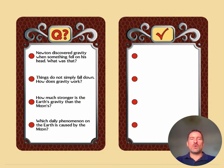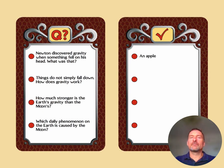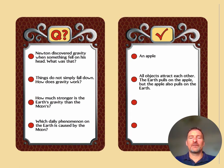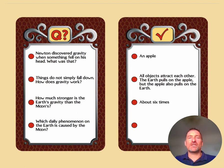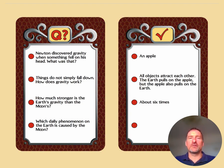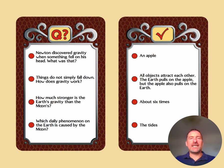What do you know about Newton? Newton discovered gravity when something fell on his head — reputedly an apple. How does gravity work? All objects attract each other: the Earth pulls on the apple, but the apple also pulls on the Earth, and things are pulled towards the centre of the Earth. How much stronger is the Earth's gravity than the moon's? About six times. And which daily phenomenon on Earth is caused by the moon? The tides — the sea going in and out.